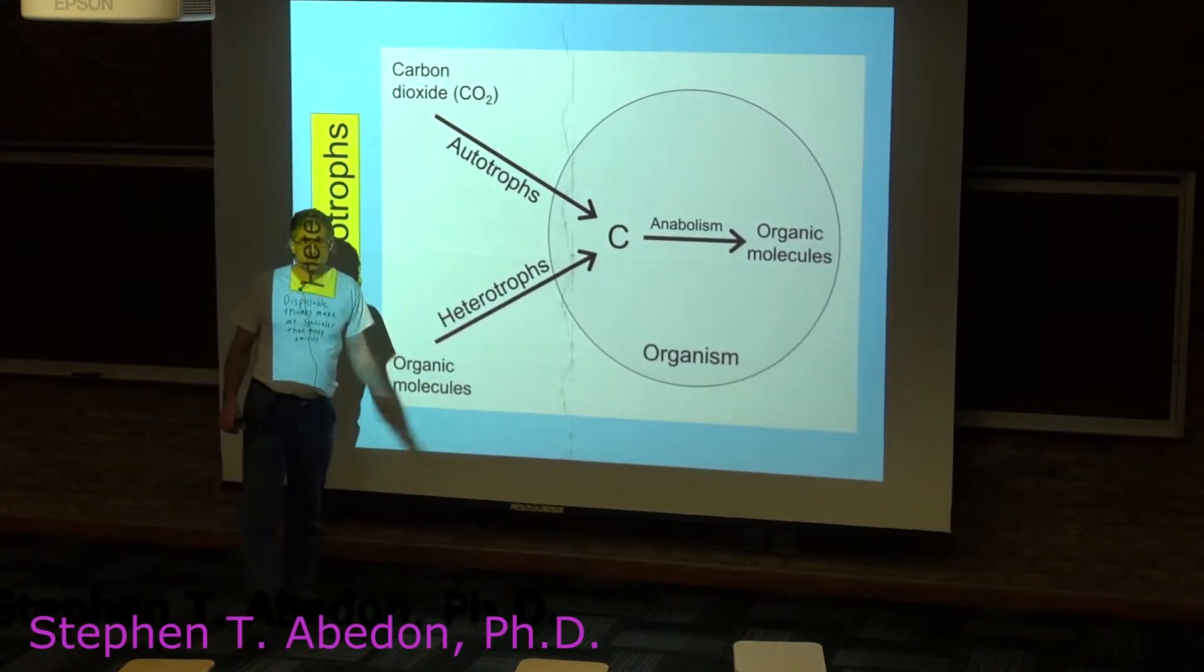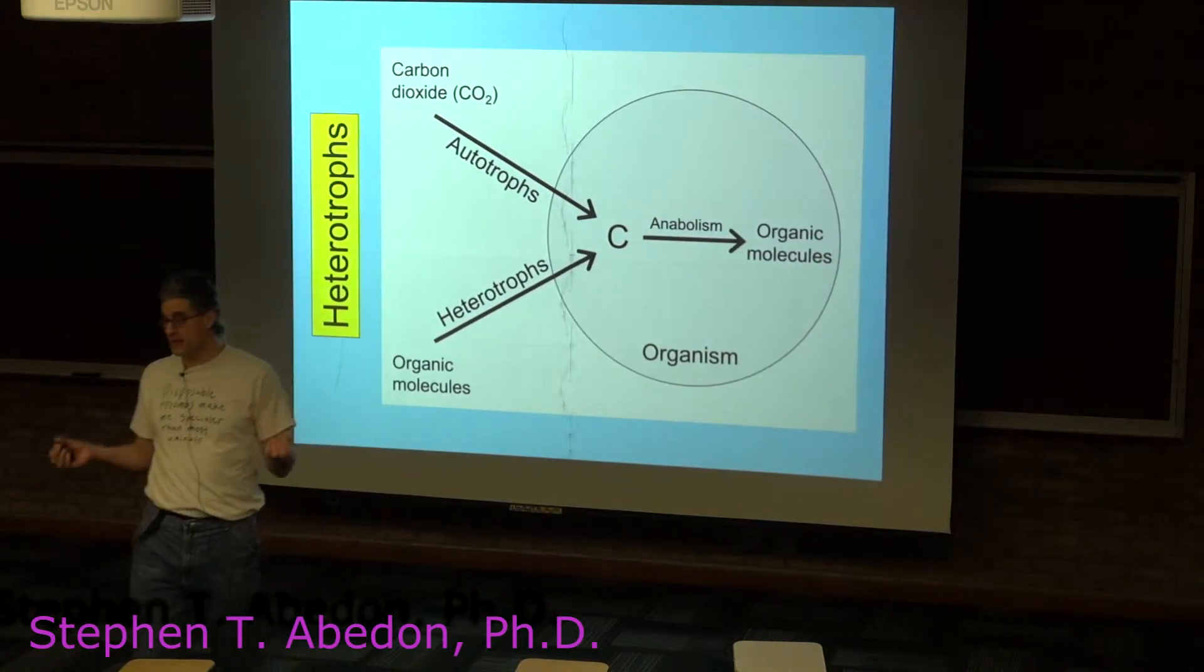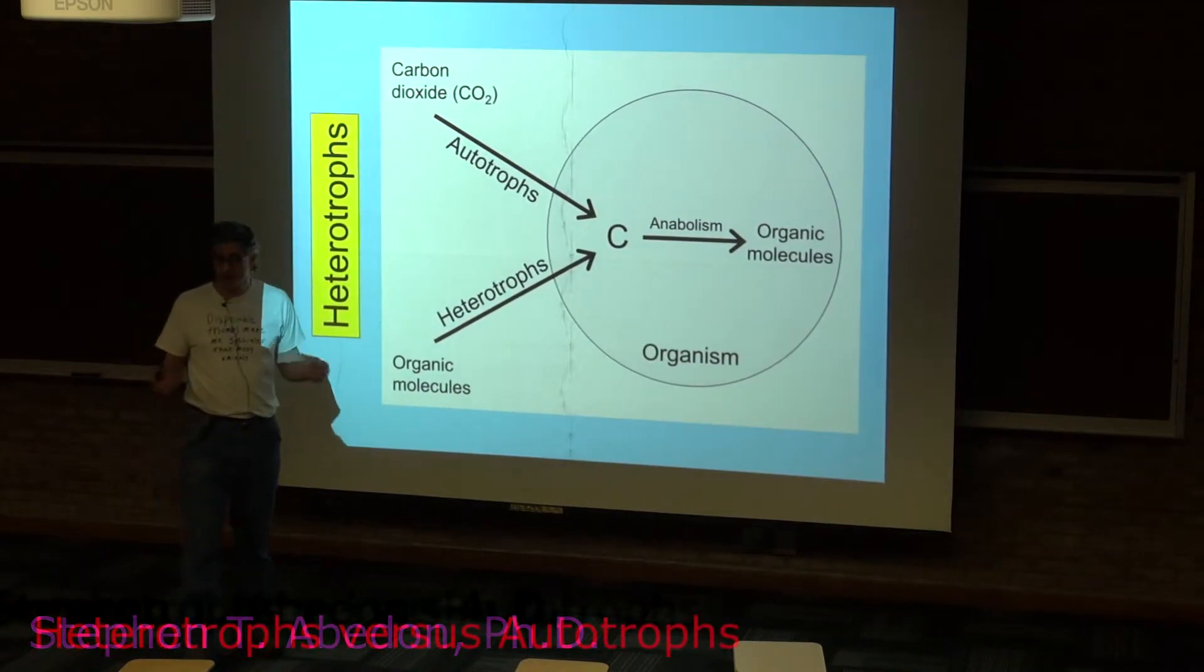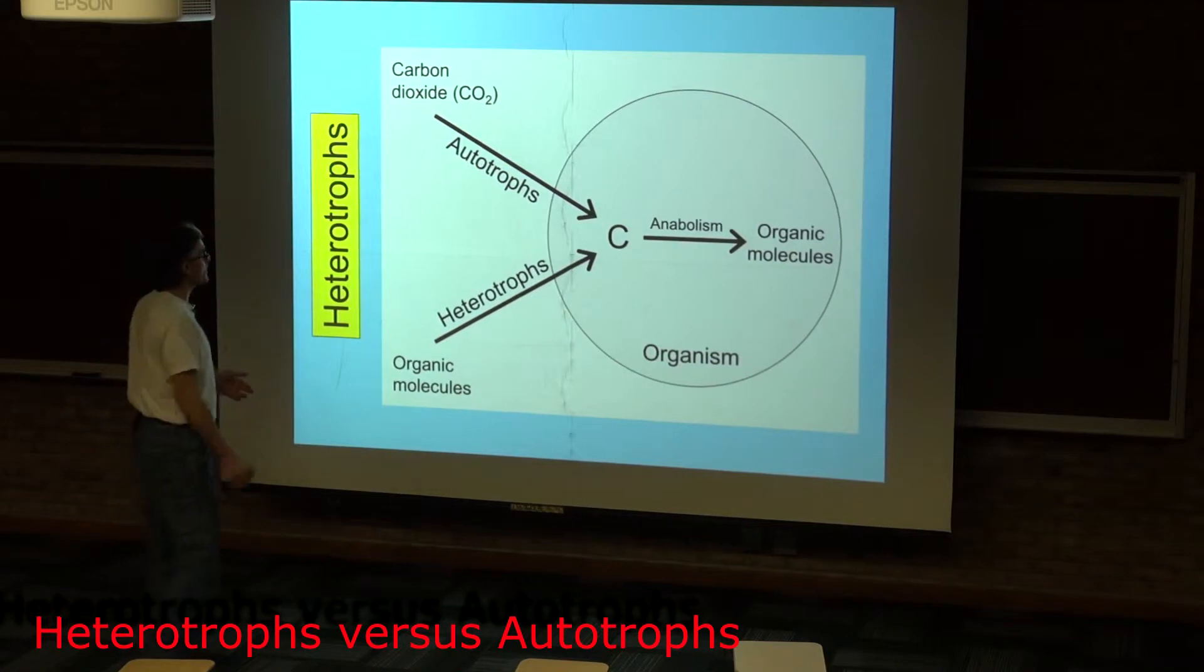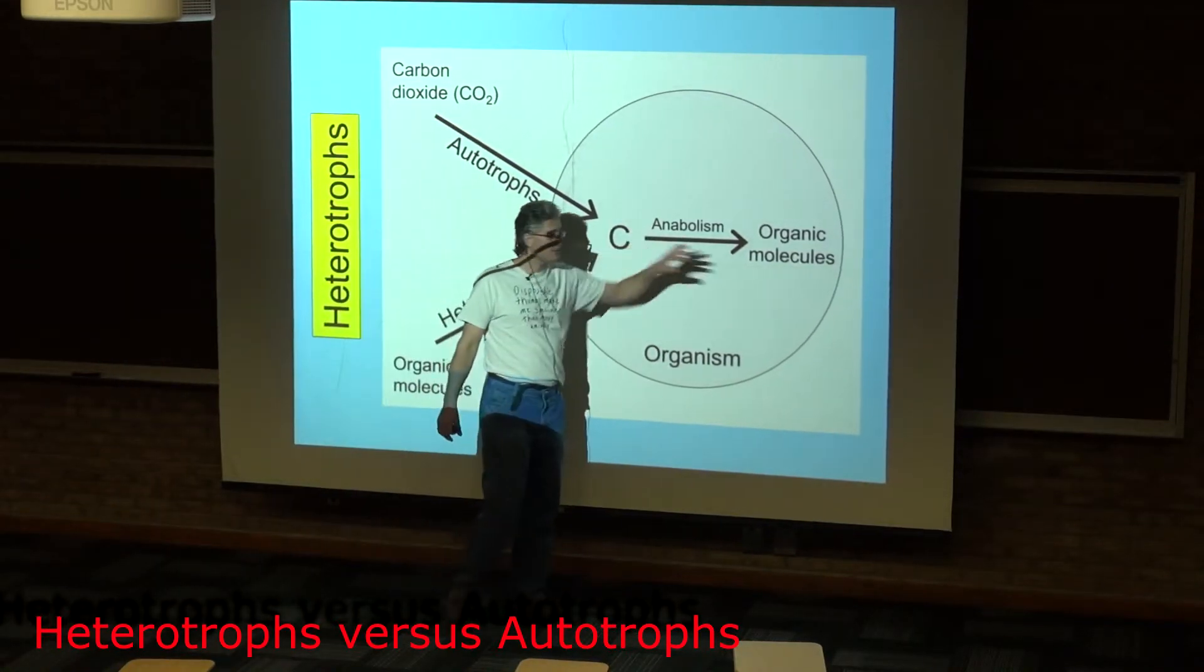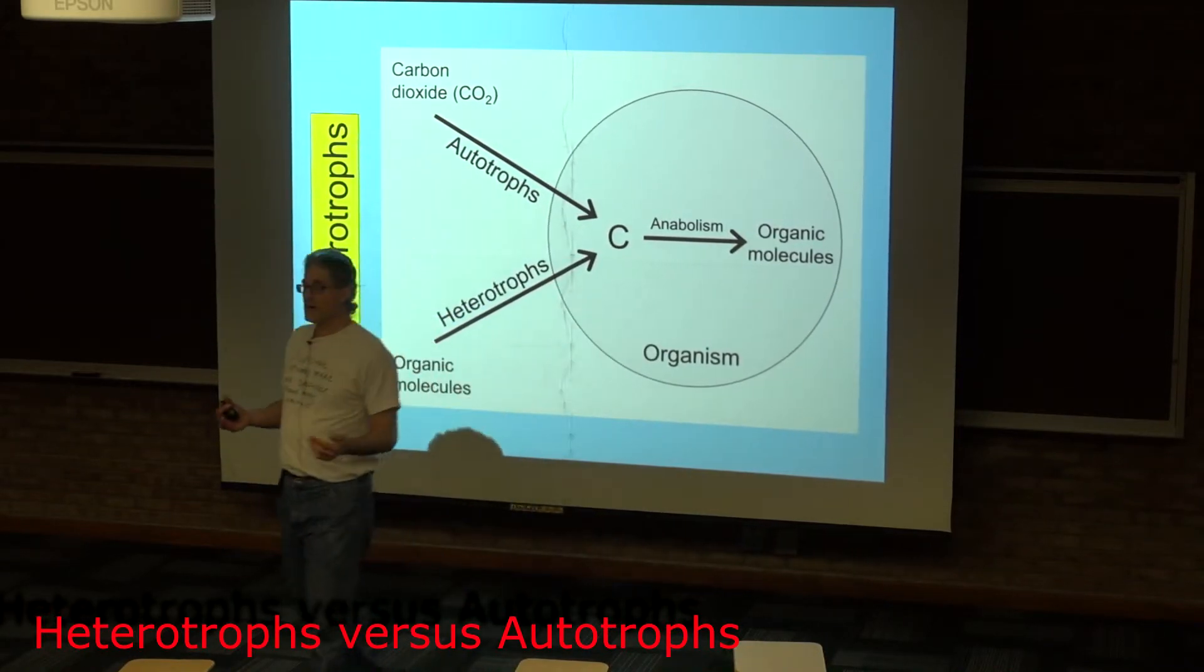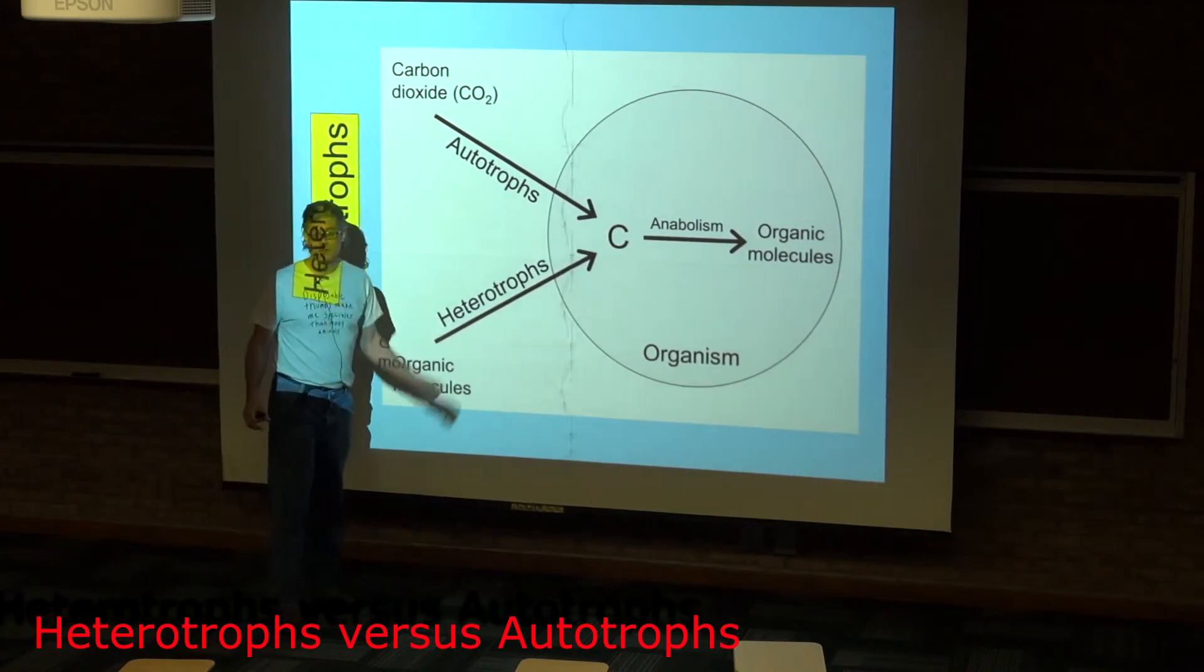By contrast are the heterotrophs. The heterotrophs obtain their carbon from the molecules associated with other organisms. And ecologically the way this works is that the autotrophs bring the organic carbon, the organic molecules into the system, and then the heterotrophs make their living by consuming those molecules.